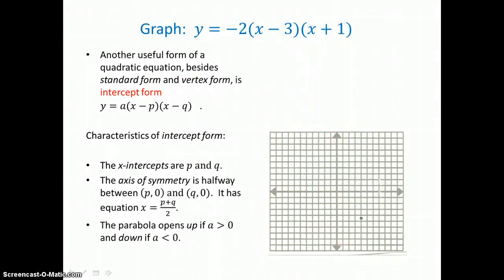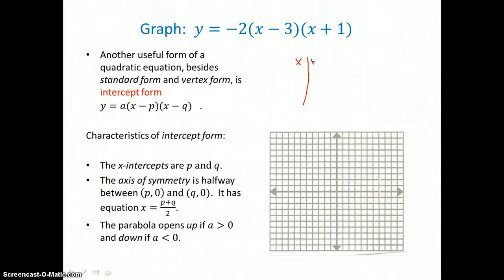Another useful form of a quadratic equation besides standard form and vertex form is intercept form: y equals a times the quantity x minus p times the quantity x minus q. In this factored form, p and q are the x-intercepts. So in my table of values, I'm going to first put those x-intercepts. p is subtracted from x, so in this case it's 3. So I have intercept (3, 0).